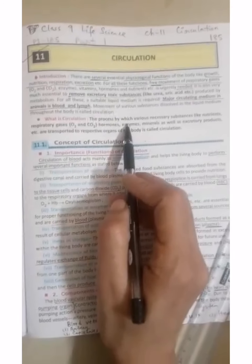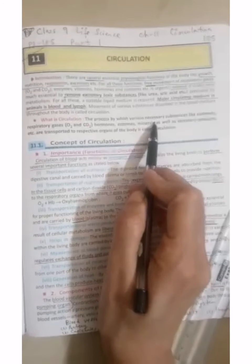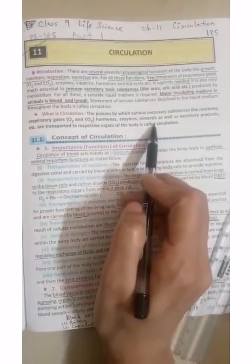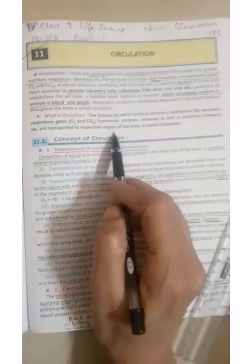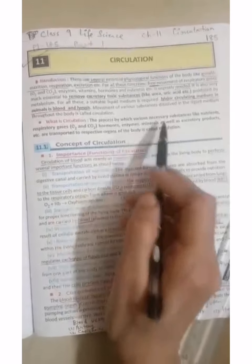Now come to the definition of circulation. Circulation is a process with the help of that, necessary substances such as nutrients, respiratory gases, hormones, enzymes, minerals or excretory products transport to the respective organs. This is known as circulation.